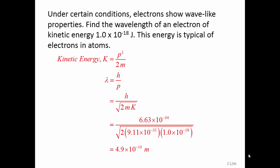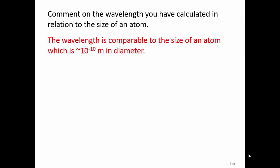The kinetic energy is p squared over 2m, and lambda is equal to h over p. Therefore, lambda is 4.9 times 10 to the power of minus 10 meters. This wavelength is comparable to the size of an atom, which is around 10 to the power of minus 10 meters in diameter.